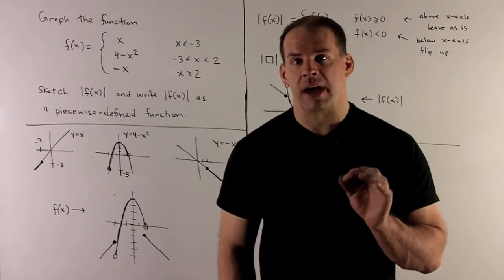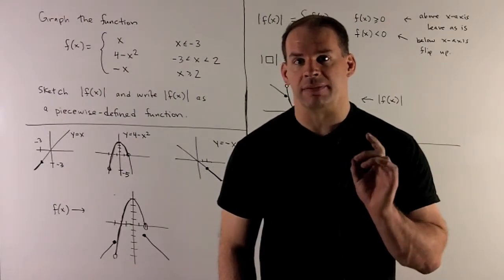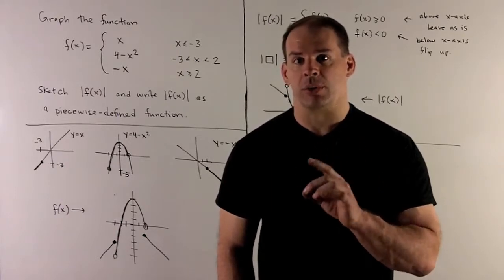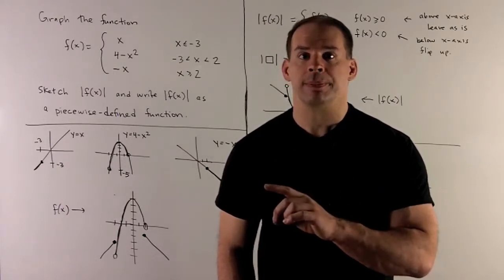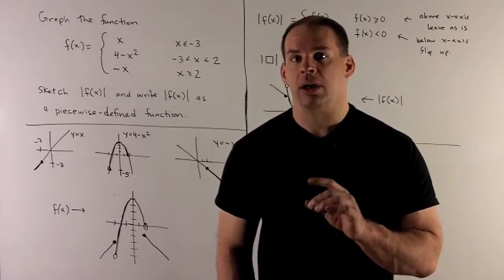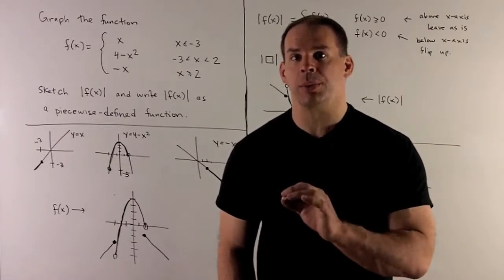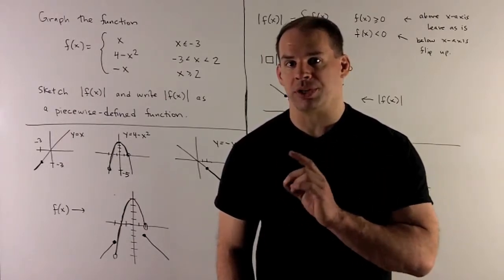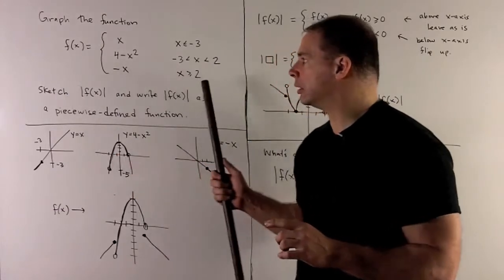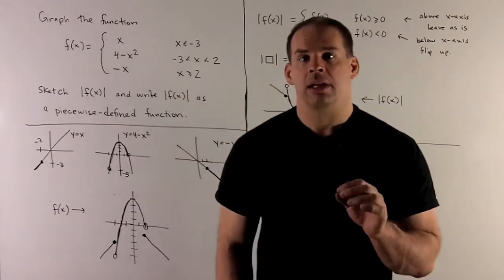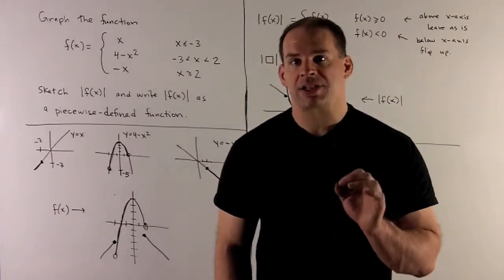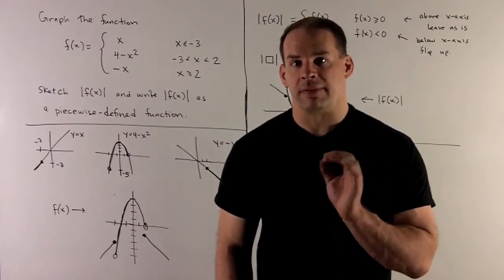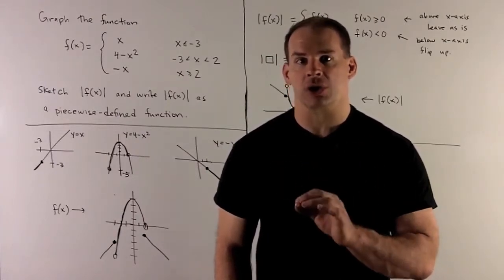Sketch the graph of the piecewise defined function f(x) equal to x when x is less than or equal to minus 3; 4 minus x squared when x is between minus 3 and 2; and minus x when x is greater than or equal to 2. Then sketch the absolute value of f(x) and describe the absolute value of f(x) as a piecewise defined function.